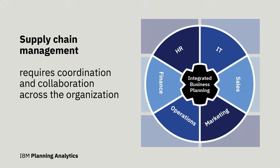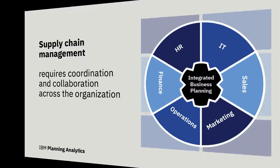Supply chain management is an iterative process that requires coordination and collaboration across many departments such as operations, marketing, sales and finance. Companies of all sizes need to match supply and demand as efficiently as possible.